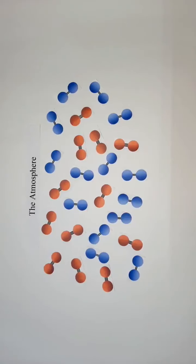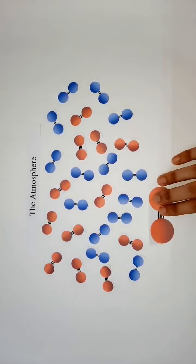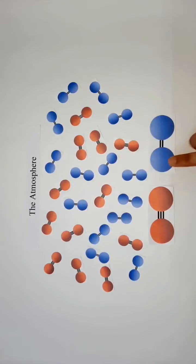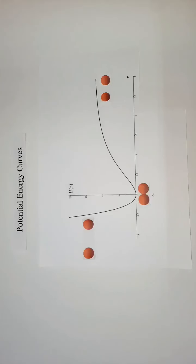Let us now talk about our Earth's atmosphere. Our atmosphere consists of predominantly nitrogen and oxygen molecules. These are diatomic molecules, meaning these molecules are composed of two atoms bonded together. A nitrogen molecule consists of two nitrogen atoms bonded by a triple bond, and an oxygen molecule consists of two oxygen atoms bonded by a double bond.